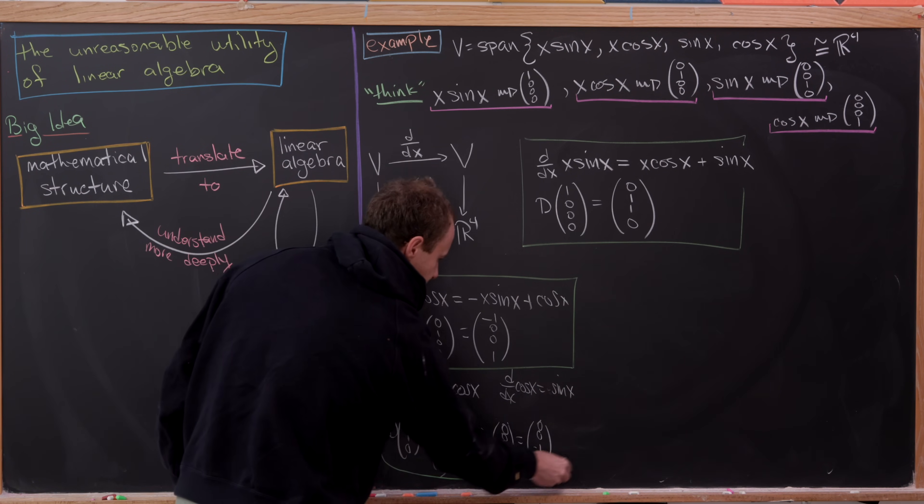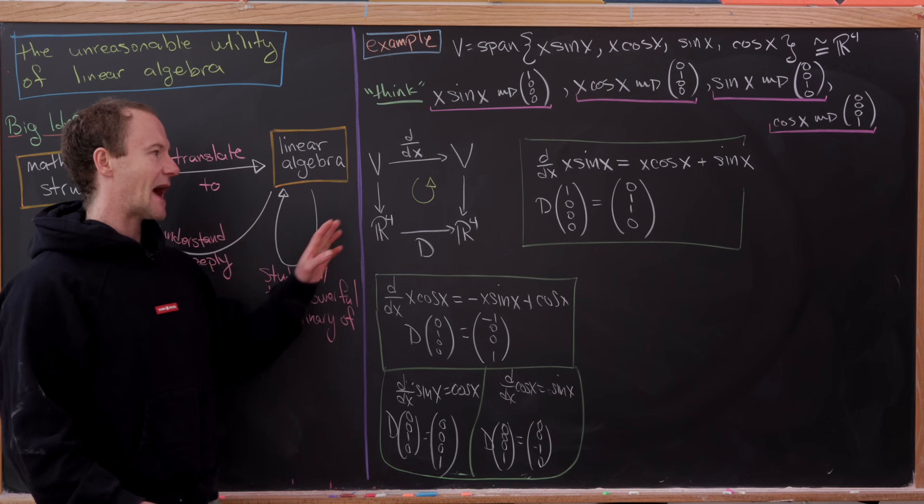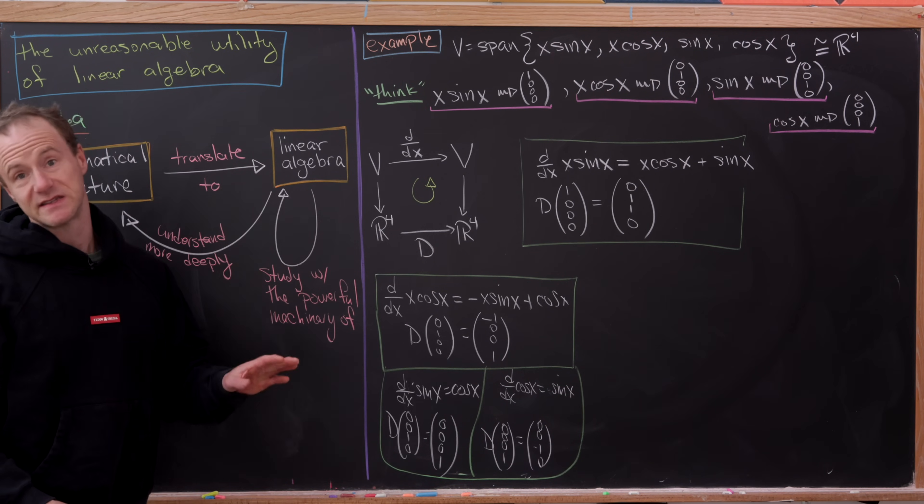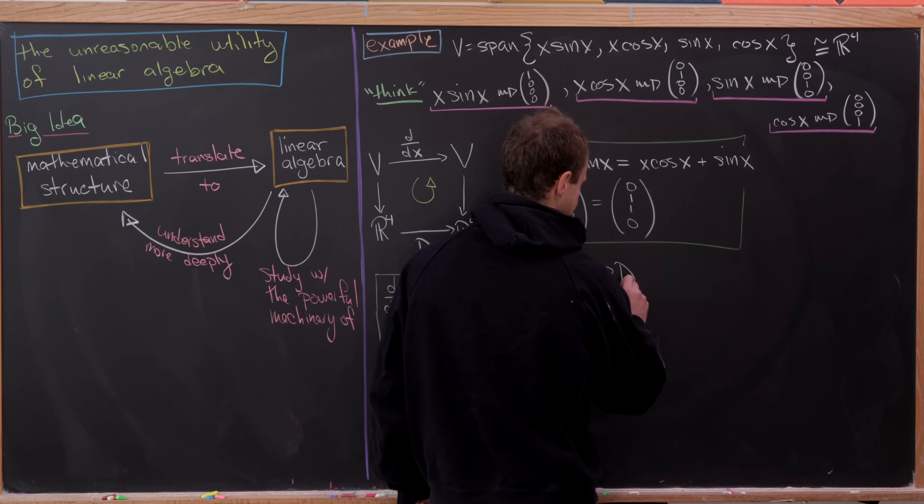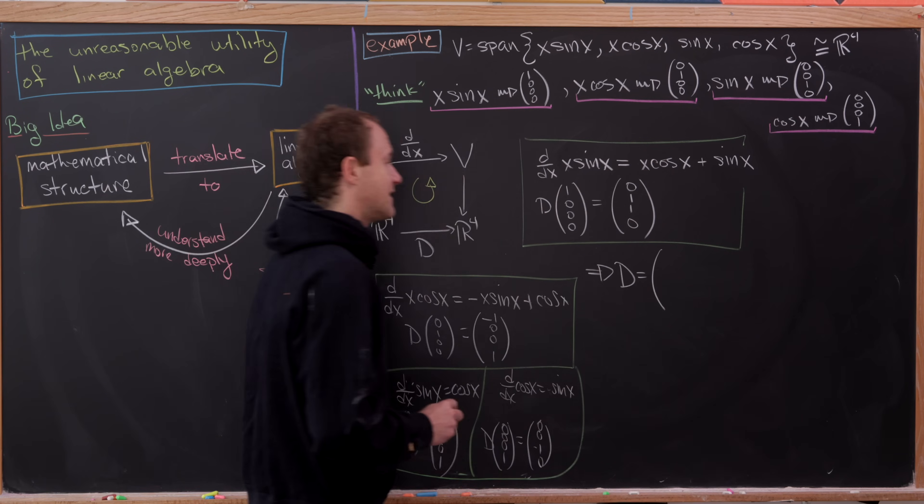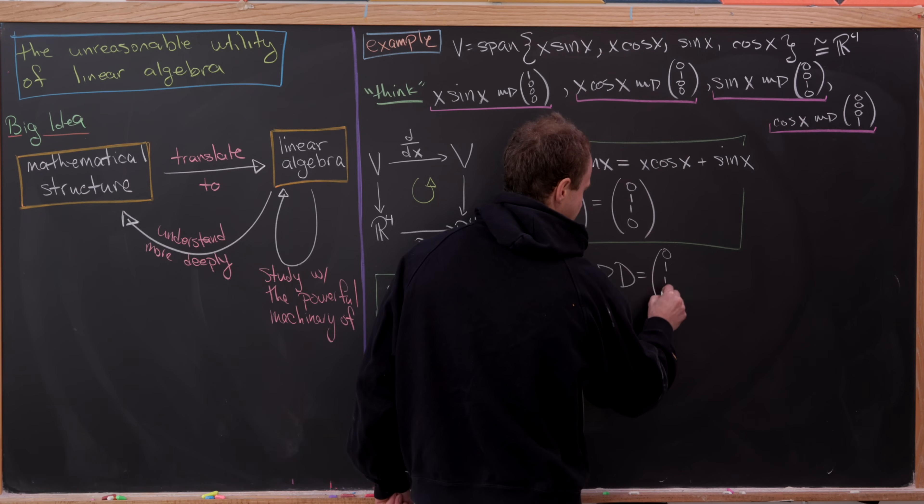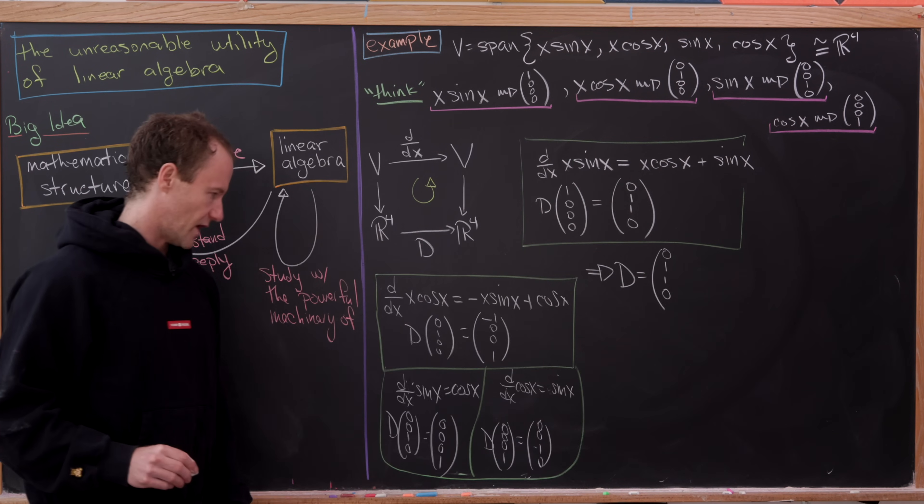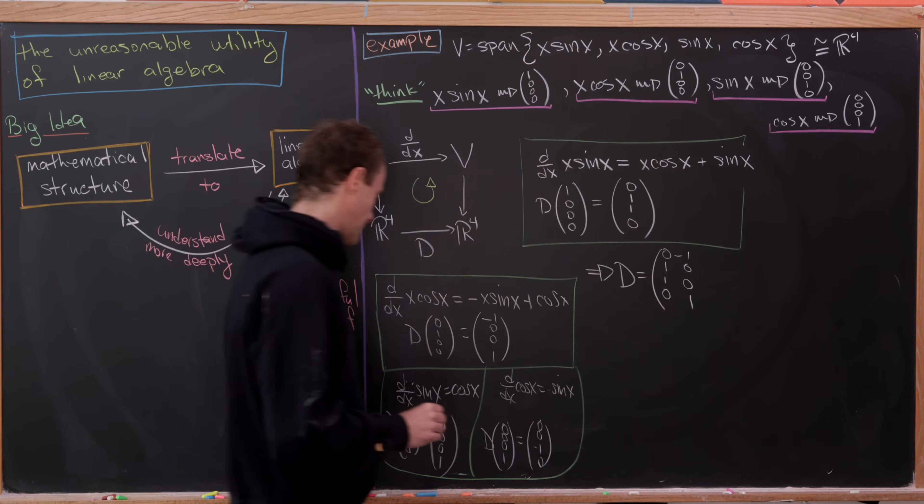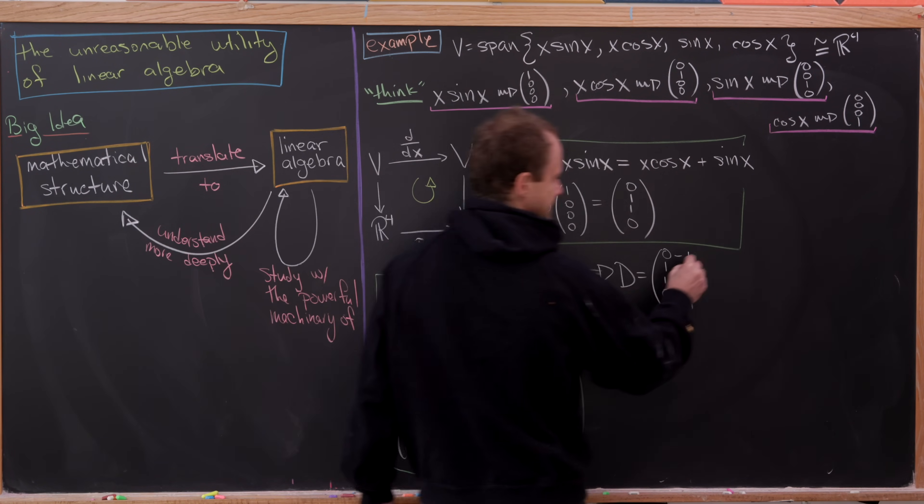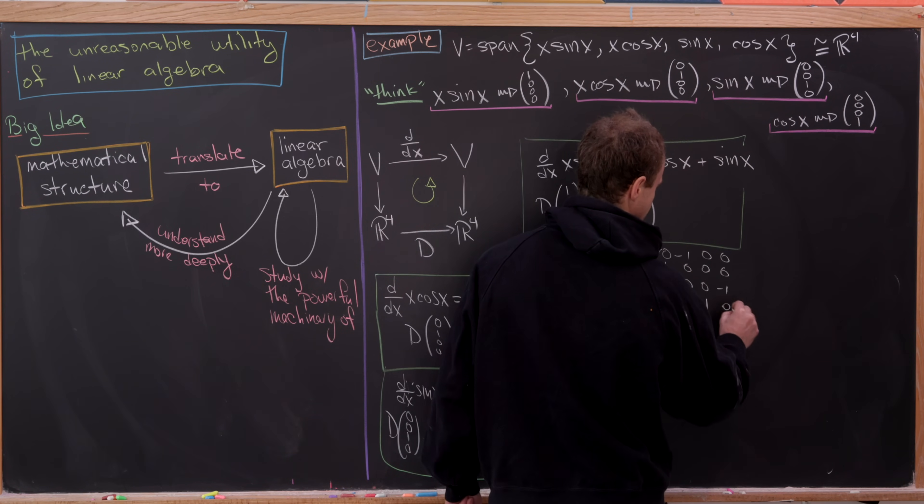So there, we've got everything we need. We have D acting on all of the standard basis vectors. But that gives us the shape of D. So we can just read this off. So D will be 0, 1, 1, 0. So I'm reading this column-wise. And then negative 1, 0, 0, 1. And then 0, 0, 0, 1. And finally, 0, 0, minus 1, 0.